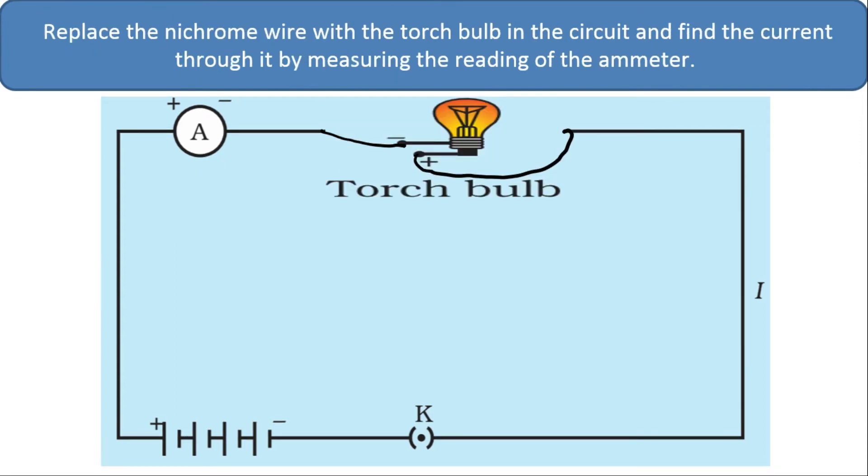Next, replace the nichrome wire with the torch bulb in the circuit and find the current through it by measuring the reading in the ammeter. Once you pass the current through the battery to torch bulb, you can see deflection in ammeter which shows the current in the circuit. Note down that current.